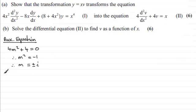That means therefore the complementary function, CF for short, is going to be v equals a constant a times e^(ix) plus another constant b multiplied with e^(-ix).